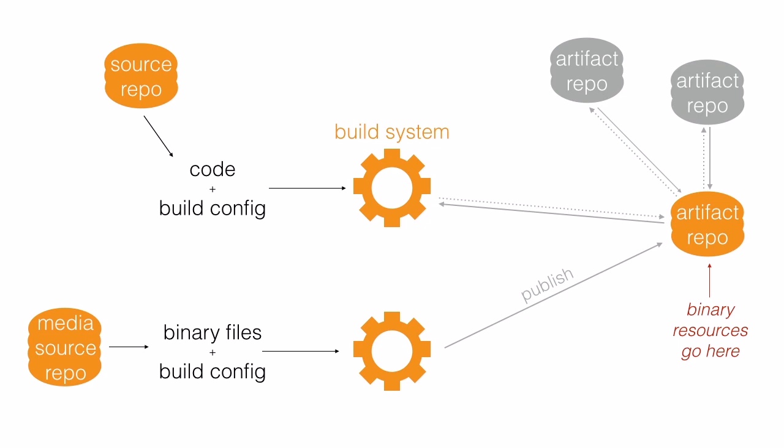Well, committing our changes to a version control repository means we can keep metadata about those changes — who changed what, why and when. But now that our binary files are in a separate version control repository, the size of those changes isn't going to impact the main source code repository.